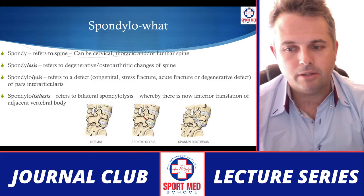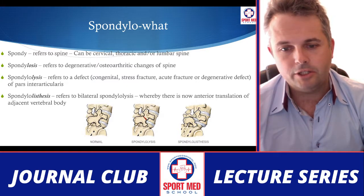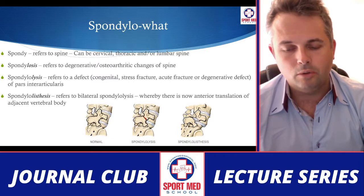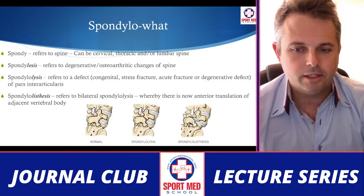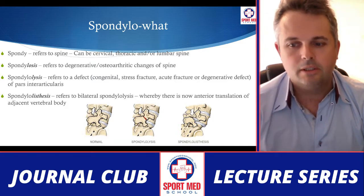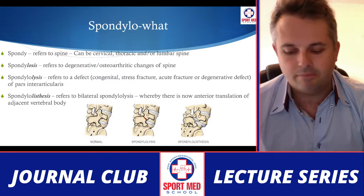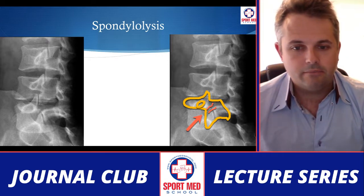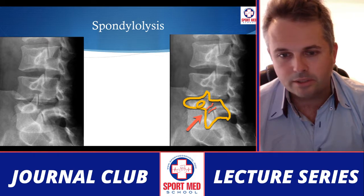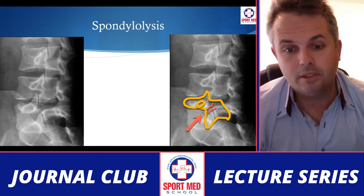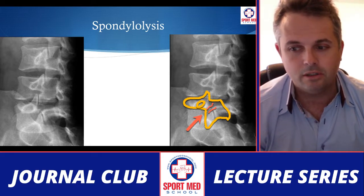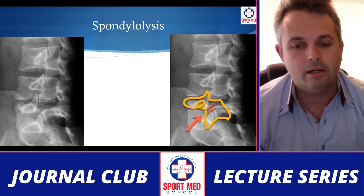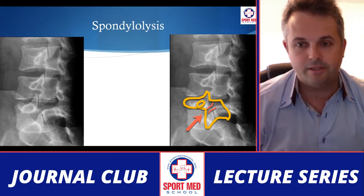Spondylolisthesis refers to a bilateral spondylolysis whereby there is anterior translation of the adjacent vertebral body. Radiographically, these are often described using the 'Scotty Dog' image — when you look at the portion of bone between the two facet joints, you see what looks like a dog, and a fracture through what is referred to as the neck of the Scotty Dog. As it progresses bilaterally, instability occurs. On the x-ray shown, you can see a break through the neck of the lower pars interarticularis, consistent with spondylolysis.